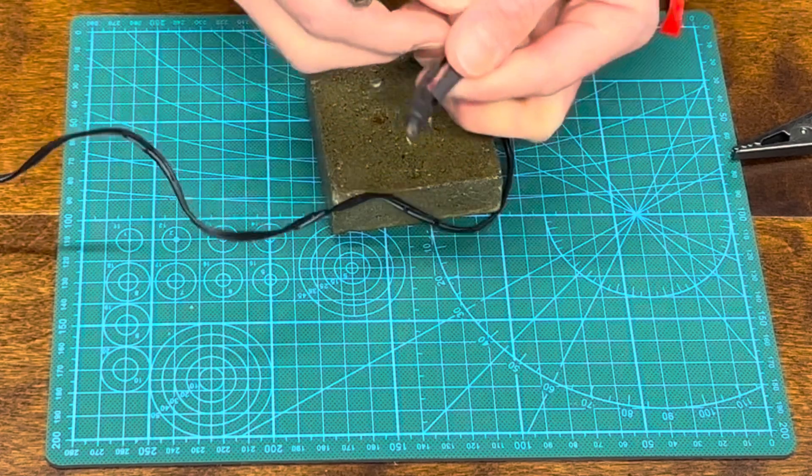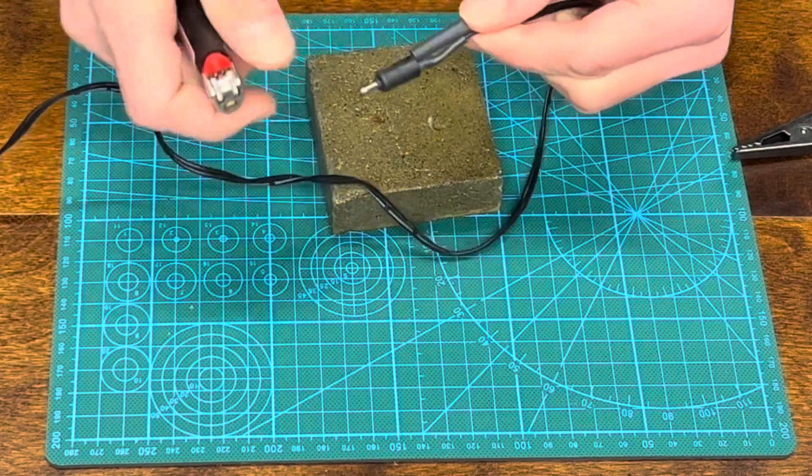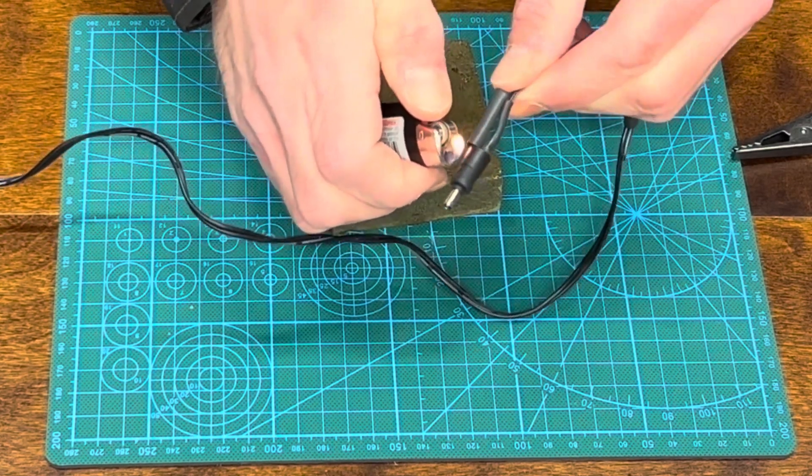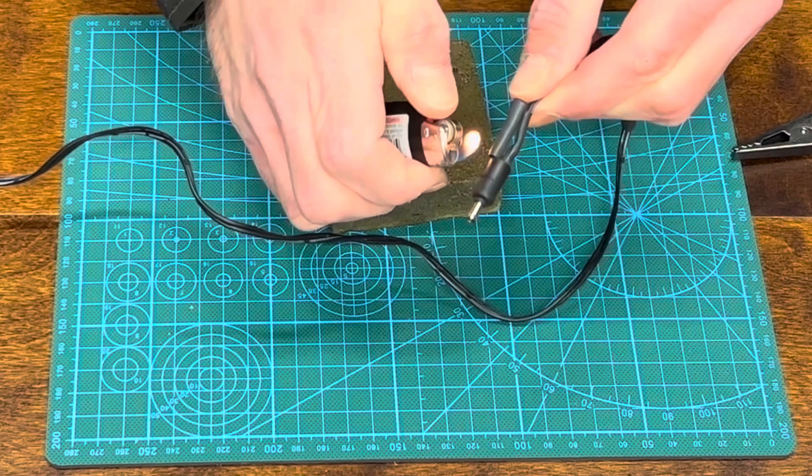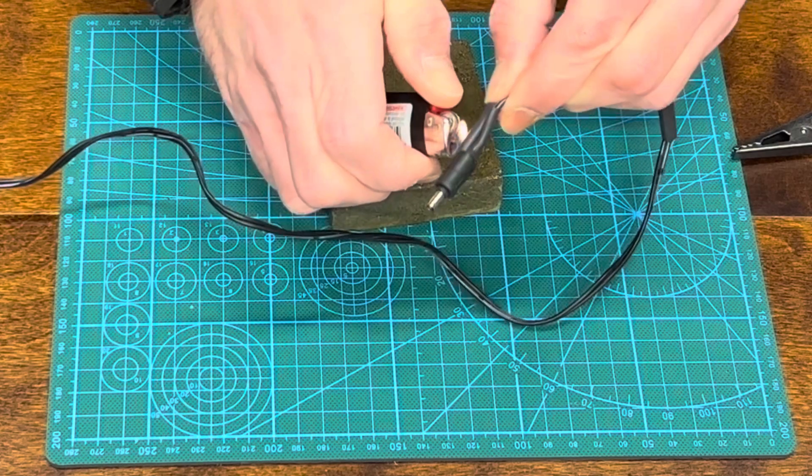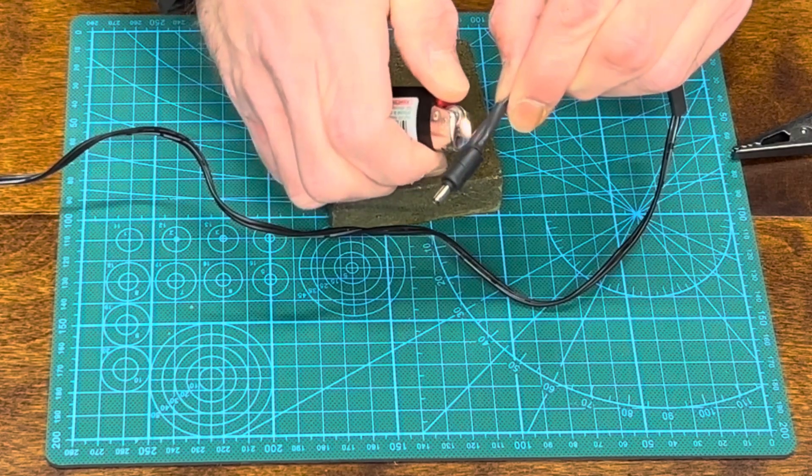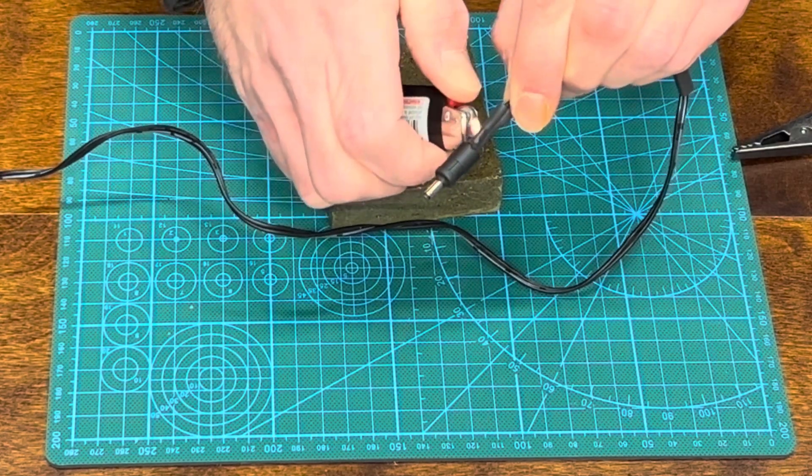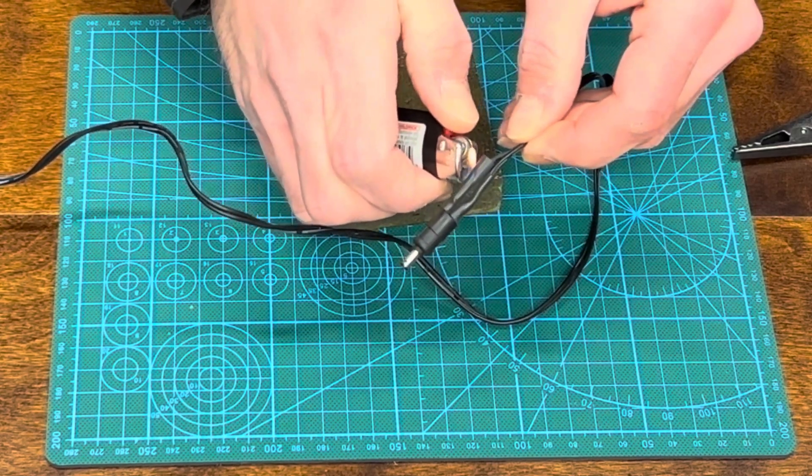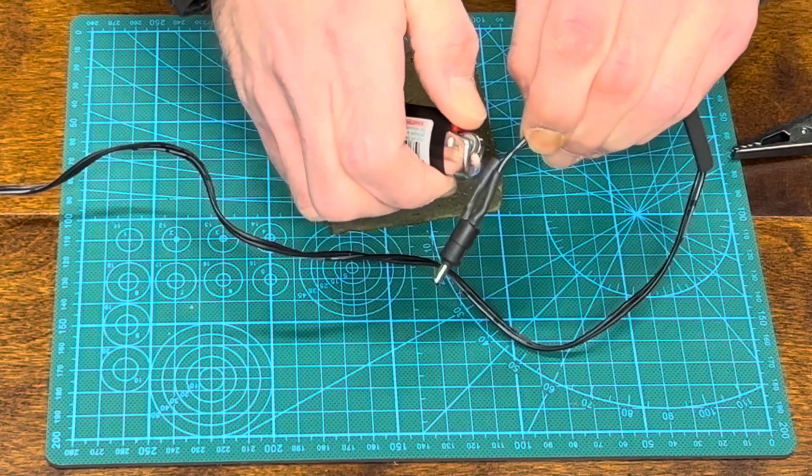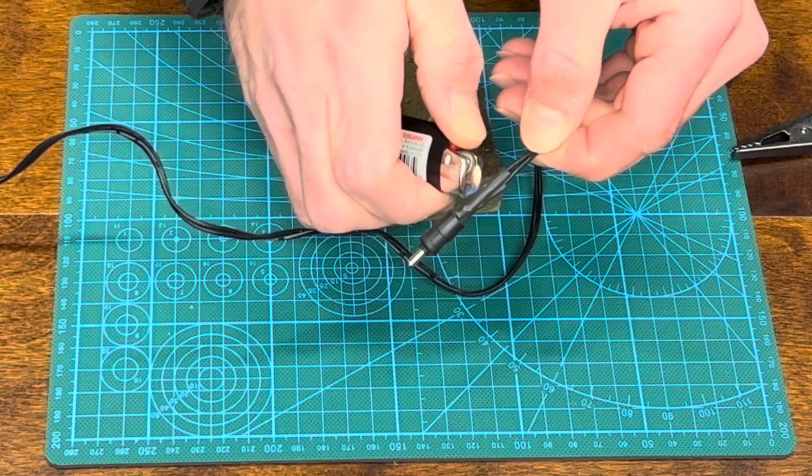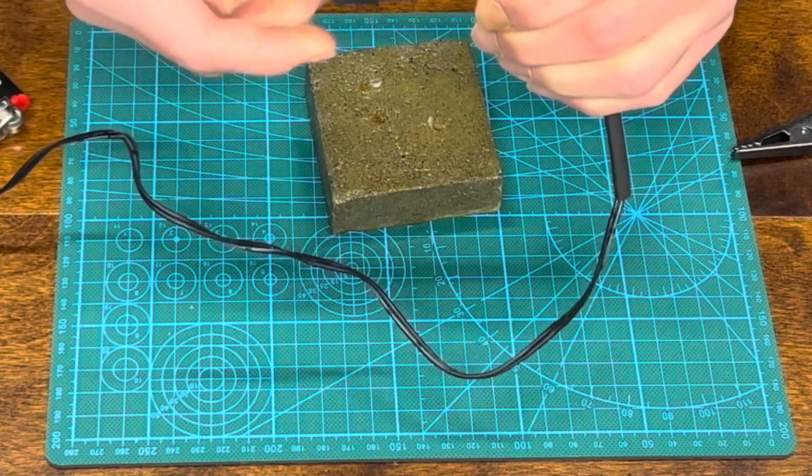Then we'll take this other one. We'll do the same thing on this one. Hold it tight with our thumb, take our lighter and just lightly go around it and shrink it on the wire. Lighter will get hot, so just be careful. It's super cold in here too, so my lighter is just not liking it.